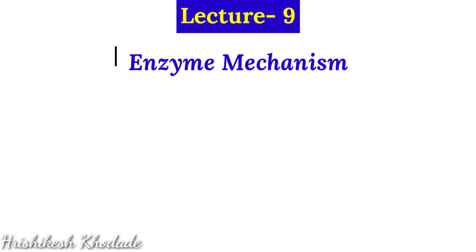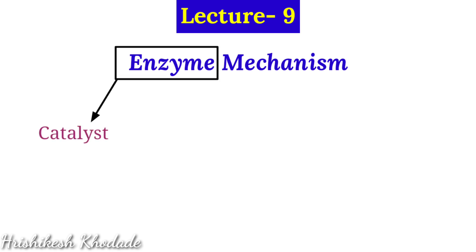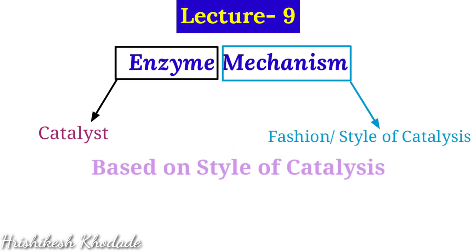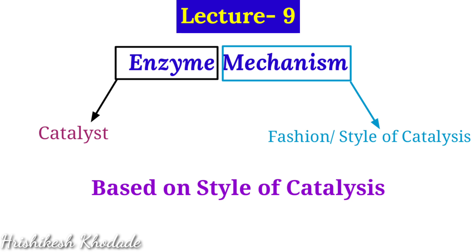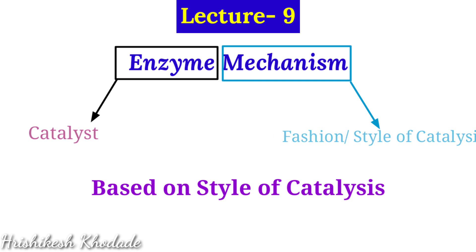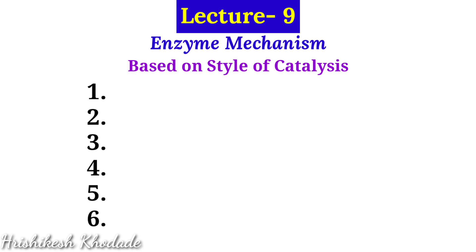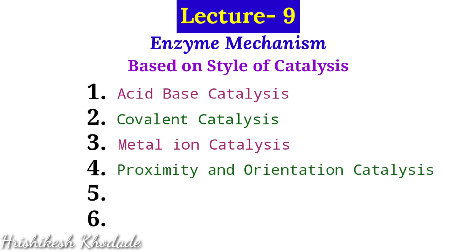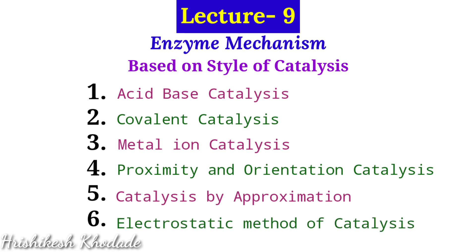We all know about enzymes which are nothing but catalysts. Every enzyme has a unique fashion of catalysis mechanism. On the basis of the style of an enzyme's catalytic mechanism, or the pattern followed by an enzyme for catalytic activity, we have six different classes: first is acid-base catalysis, second is covalent catalysis, third is metal ion catalysis, fourth is proximity and orientation effect in catalysis, fifth is catalysis by approximation, and the last is electrostatic method of catalysis.